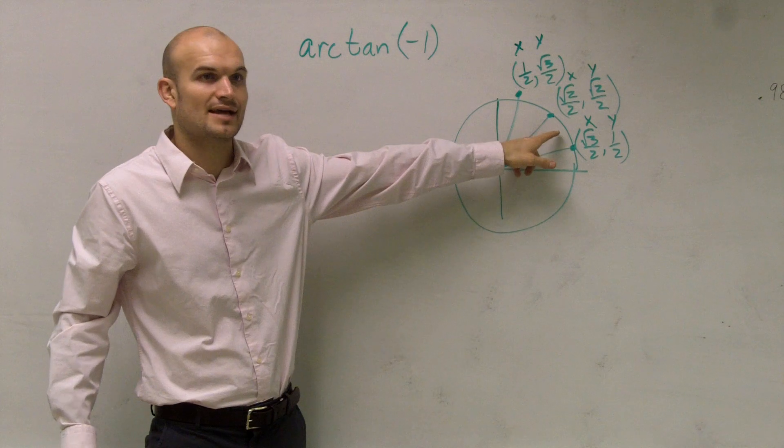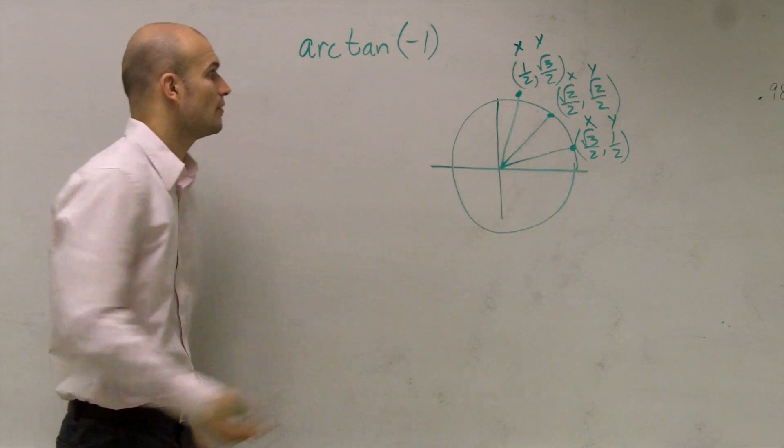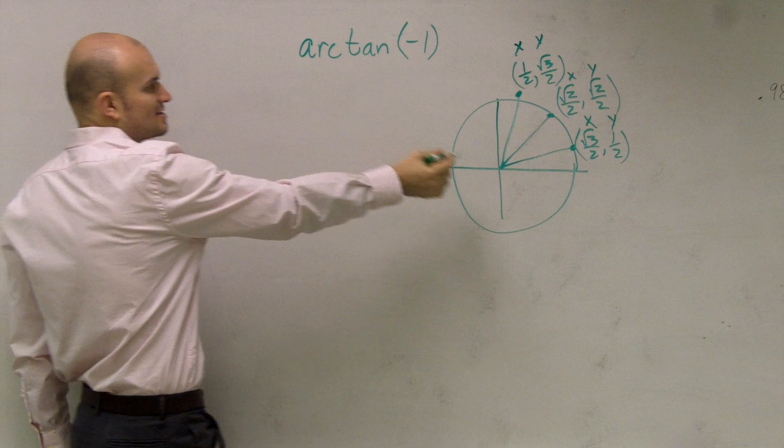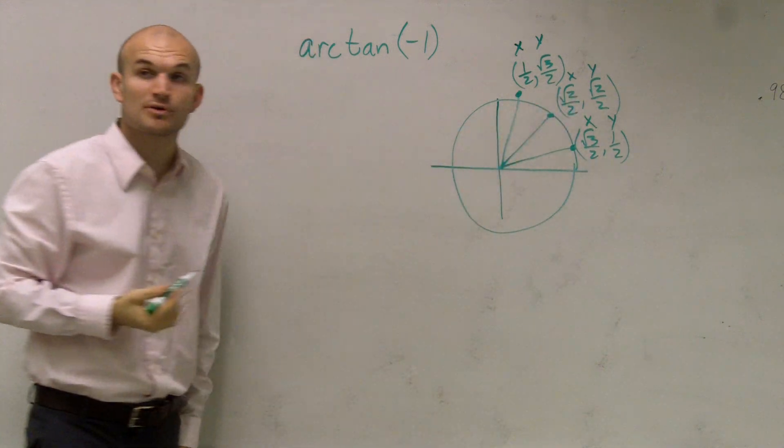And what is that? What is this angle in radians? Pi over 4. So what we notice, and the reason why is because the y and the x are the same, so they're going to produce a 1, right?